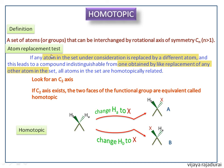So, a C2 axis exists. The two faces of the functional groups are equivalent, called homotopic. This propane molecule has a C2 axis, and the two hydrogens are homotopically equivalent.